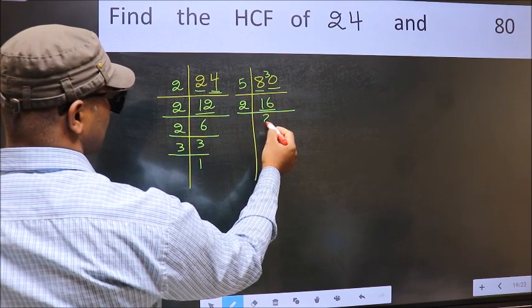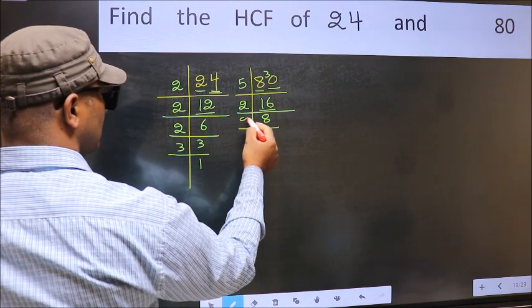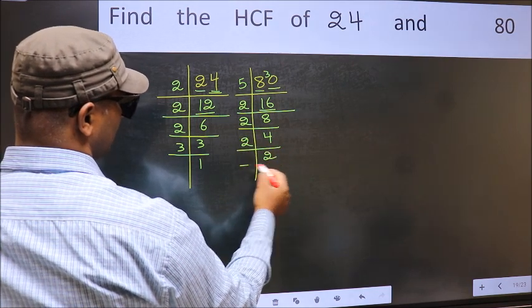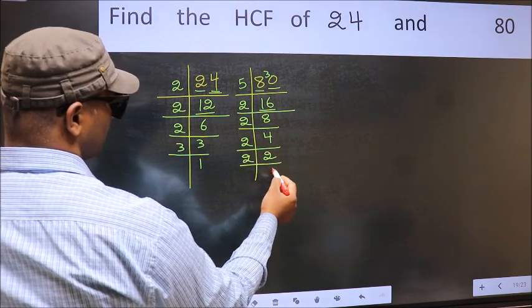Now 16 is 2 times 8 is 16. 8 is 2 times 4 is 8. 4 is 2 times 2 is 4. Now 2 is a prime number, so 2 times 1 is 2.